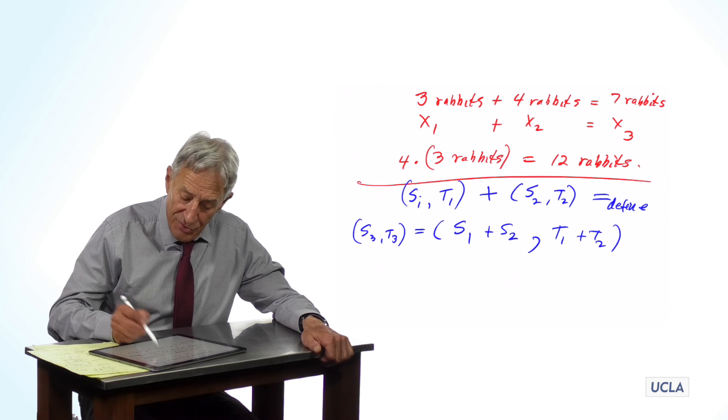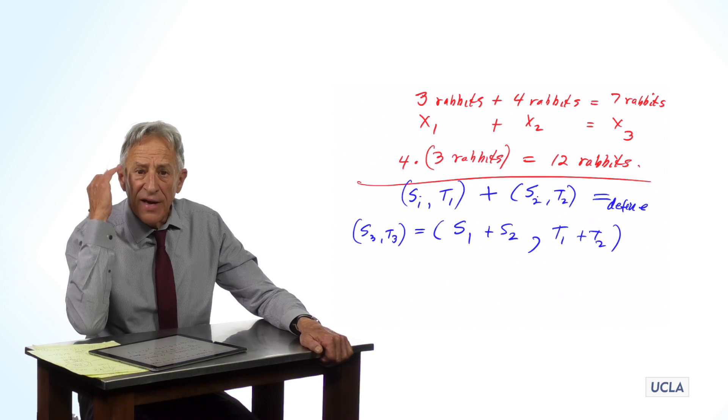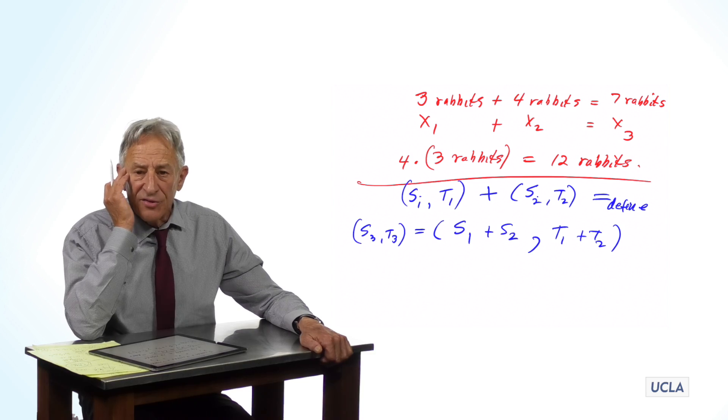So, we add the two S components, we add the two T components. That is the sum of two vectors. We say vectors add component-wise.